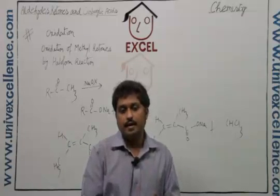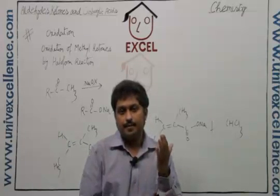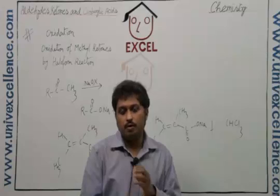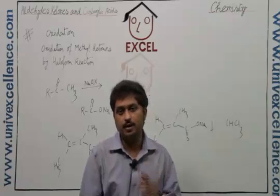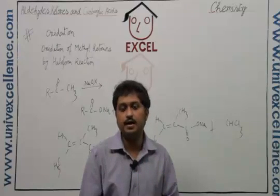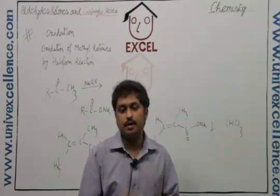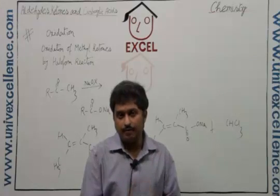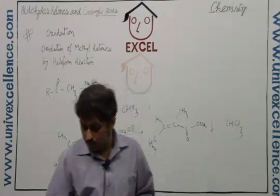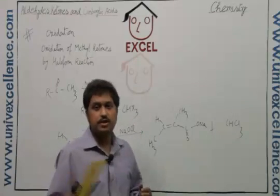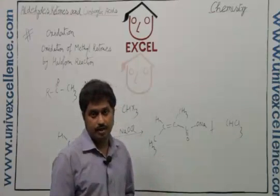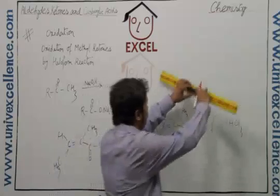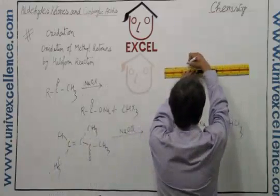This is called the haloform reaction, where an aldehyde or ketone containing at least one methyl group attached to the carbonyl carbon is oxidized, but the carbon number of the resulting acid is less compared to the starting material. If the compound contains a carbon-carbon double bond, that will be unaffected after the reaction. This oxidation reaction in the presence of a mild oxidizing agent can be summarized as described.